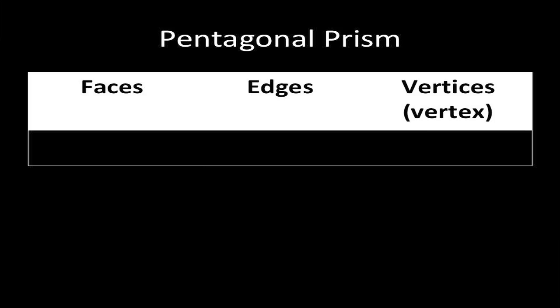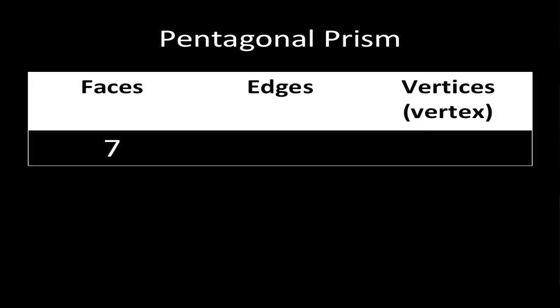It's going to be easier for us to keep track of how many faces, edges, and vertices this prism has by making a table. We have two bases, also faces, that are pentagons, so that's two, and then each of these is a face. There are five of them, so the two bases plus these faces means that a pentagonal prism has seven faces.